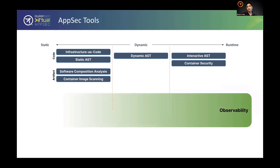Depending on your application type, you need one or more of these tools to get comprehensive coverage. The problem is too many tools: you have to tie them all together, manage and set them up, and deal with high alert volumes. Some teams add yet another tool to deduplicate and fine-tune alerts from all the others — and that becomes another tool to manage.